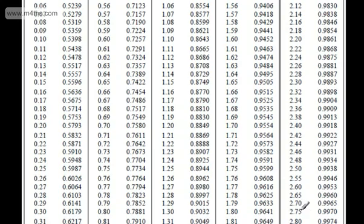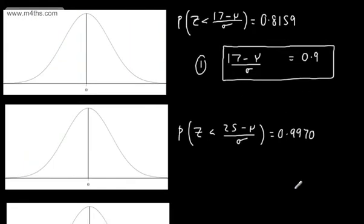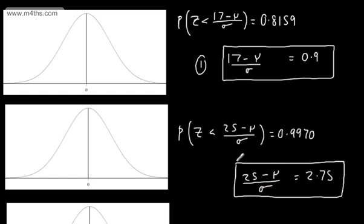Looking up 0.9970 gives z = 2.75. So I'm going to write that 2.75 is equal to 25 minus mu divided by sigma. We now have simultaneous equations involving sigma and mu.